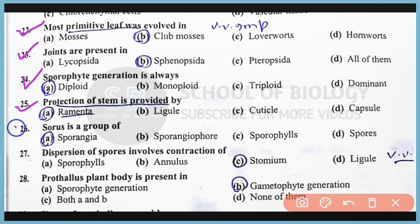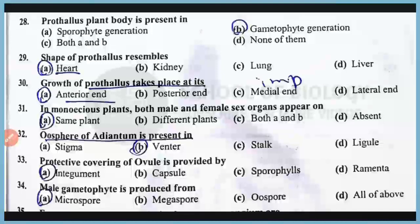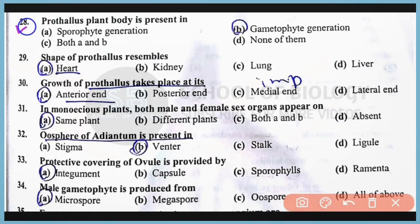Question Number 26: Sorus is actually a group of sporangia. The correct answer is Option A. Question Number 27: Dispersion of spores involves the contraction of stomium. The correct answer is Option C. Question Number 28: Prothallus plant body is present in the gametophyte generation in plants.